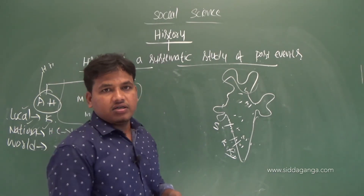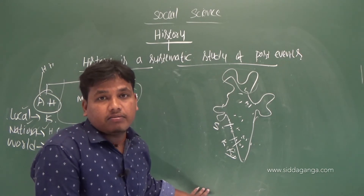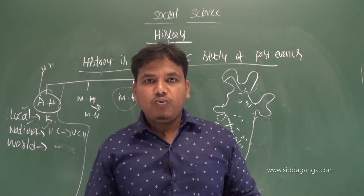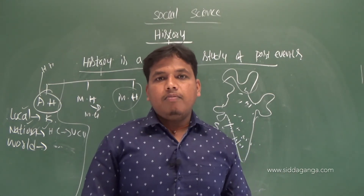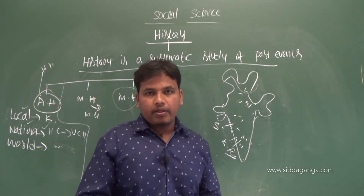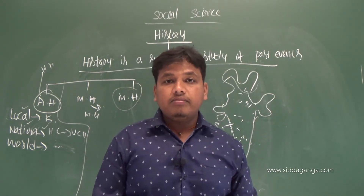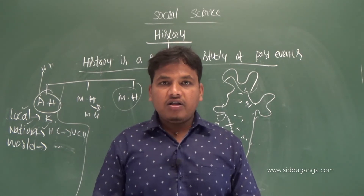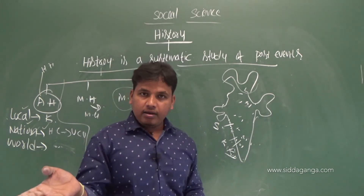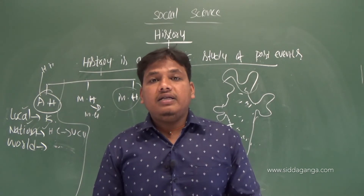He also demolished the Somnath temple of Gujarat. Next, Muhammad Gori came to power. In the famous Battle of Tarain in 1191, Muhammad Gori was defeated by Prithviraj Chauhan. In the second Battle of Tarain the following year, Prithviraj Chauhan was defeated and killed by Muhammad Gori. Gori's disciple, Qutb-ud-din Aibak, then started the Delhi Sultanate.